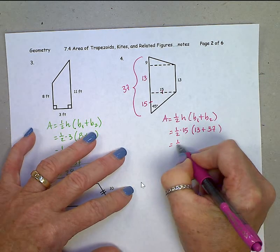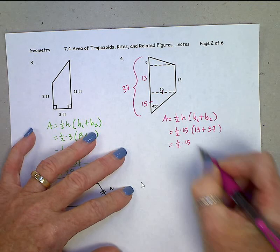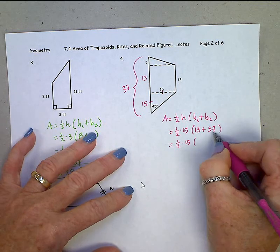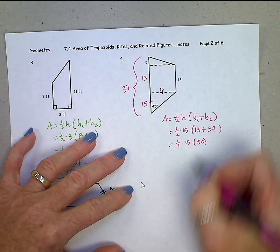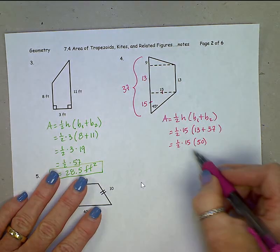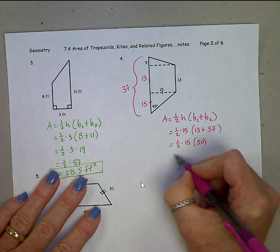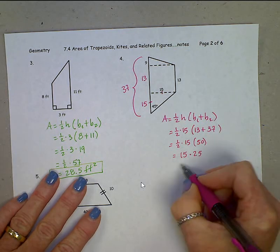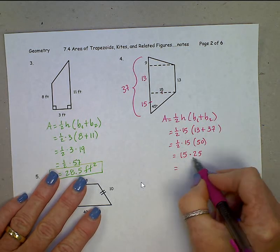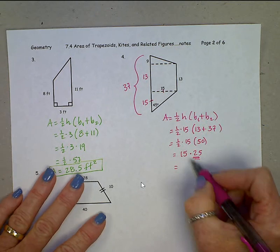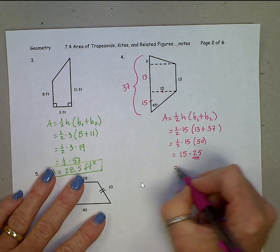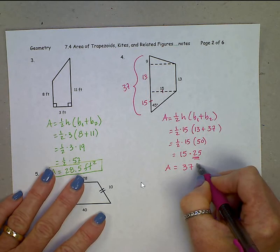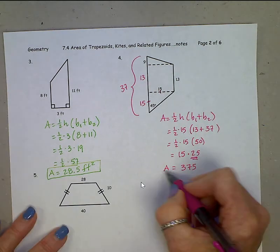One half of 15 times 13 plus 37, 50. Okay, I would do half of 50, which is 25. Now, to multiply this in your head, think money. Think of these 25s as quarters. You have 15 quarters in your pocket. That's $3.75. There's that area.